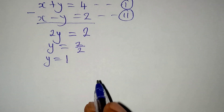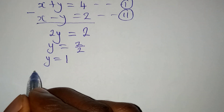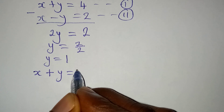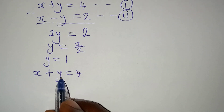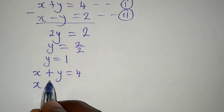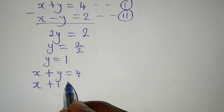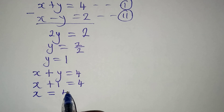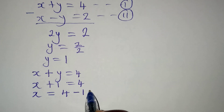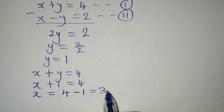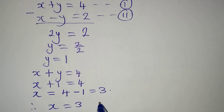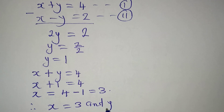When y equals one, let's pick equation one: x plus y equals four. So if y equals one, then x plus one equals four, and x equals four minus one, which gives us three. Therefore x equals three and y equals one.